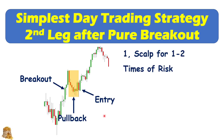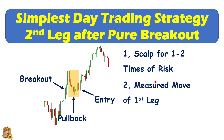For the profit target, we scalp for one or two times of the risk, which means you measure from your entry to your stop — the actual stop — and set your profit target as one or two times the risk, or between. You can also use measured move to set your profit target, measuring from the first breakout bar to the last bar of the first lag, and then from the bottom of the pullback to set your profit target.